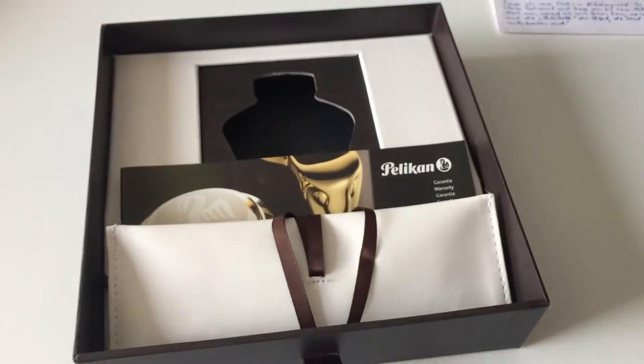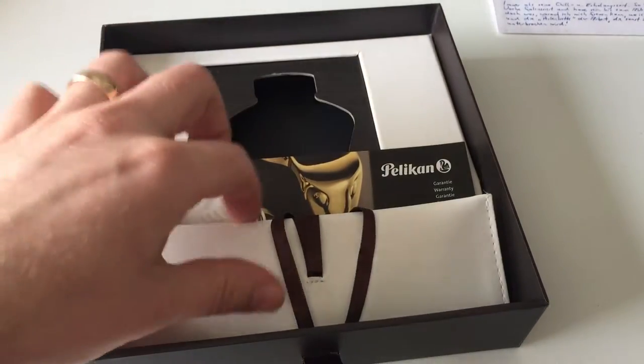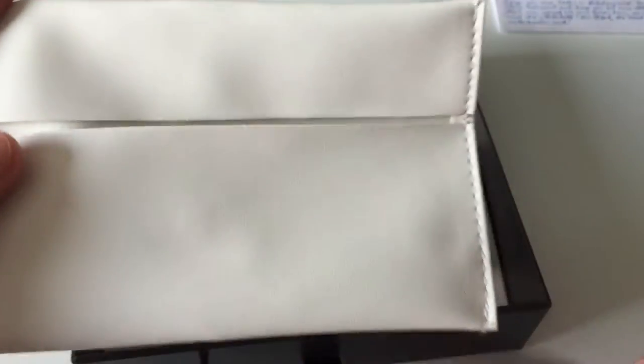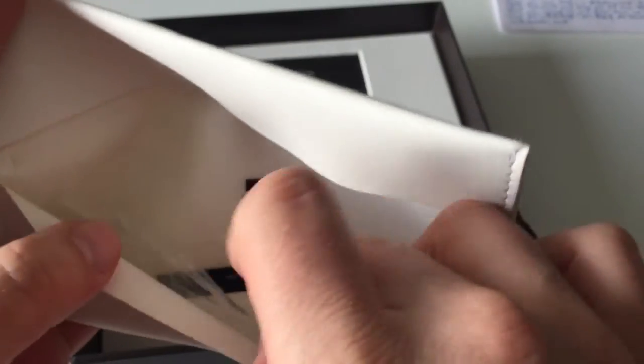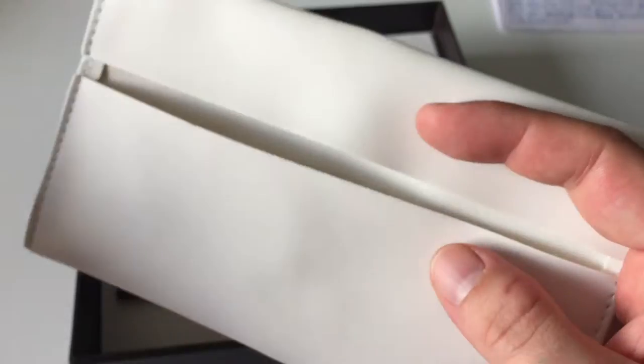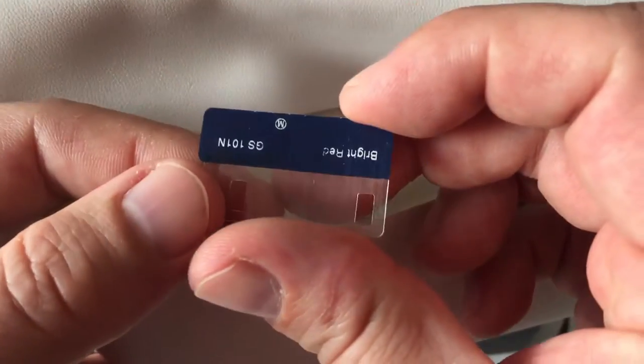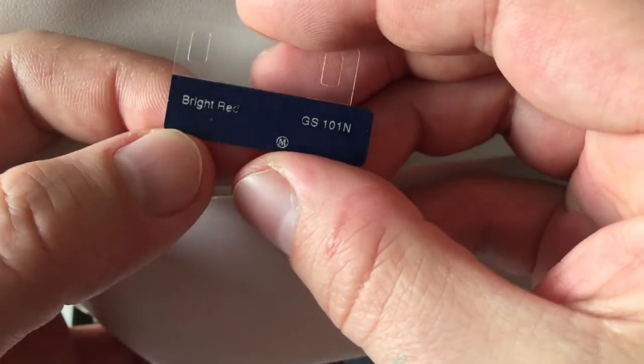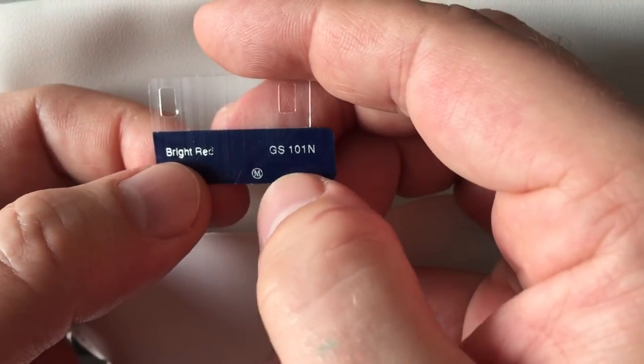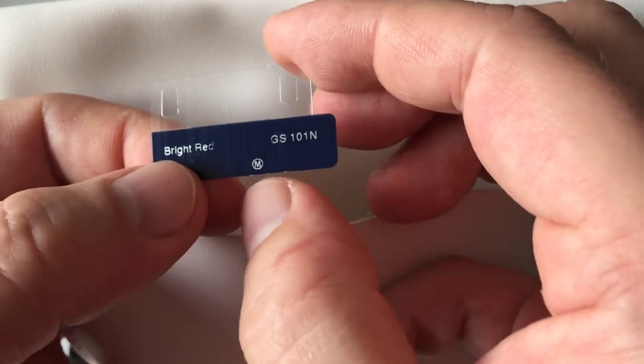Then you have this small leather sleeve that many Pelikan pens come in, the M200s and M400s and so on, saying Pelikan Bright Red M101N, and I got the one with a medium nib.